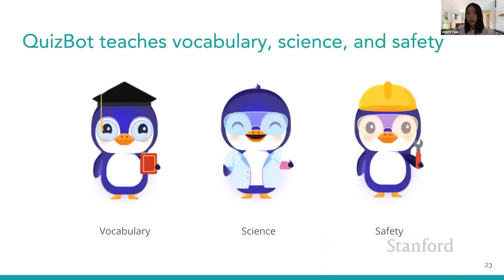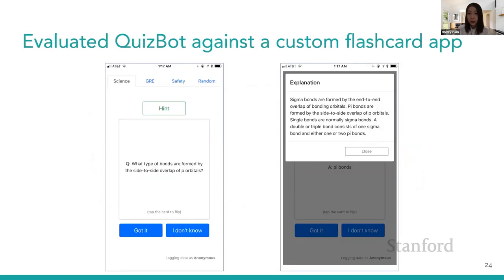In QuizBot, I teach people factual knowledge in three areas: advanced English vocabulary, science, and safety rules. I chose these subjects because they are important sub-areas of factual knowledge that people usually learn in their daily lives. I hypothesize that this new conversational AI-based interaction can make factual knowledge learning more engaging and effective.